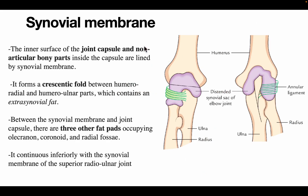Synovial membrane: the inner surface of the joint capsule and non-articular bony parts inside the capsule are lined with the synovial membrane. There is a crescentic fold present between the humeroradial and humeroulnar parts, which contains extra synovial fat. Between the synovial membrane and the joint capsule, there are three fat pads occupying the olecranon, coronoid, and radial fossae.